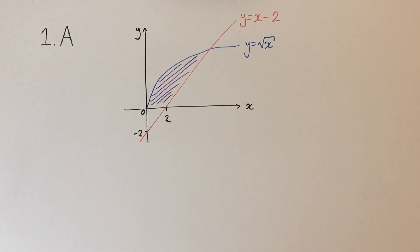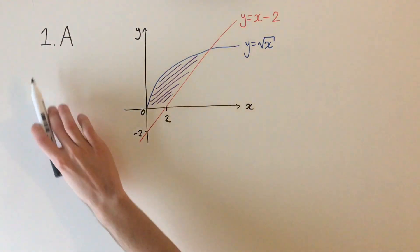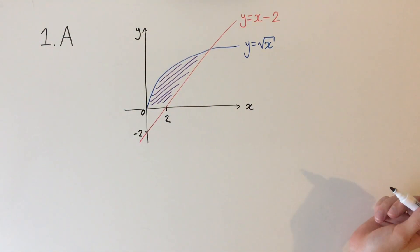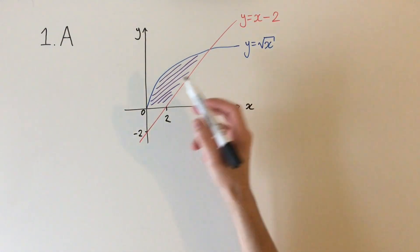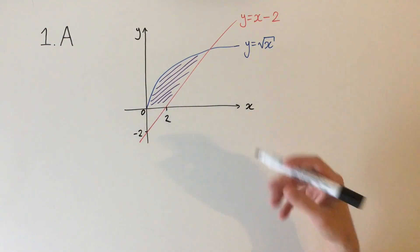Okay, so today we're going to be looking at a question from the Oxford MAT entrance exam. This is question 1A from the 2018 paper. The question is essentially to find the area of this purple shaded region. So it's going to be an integration question.